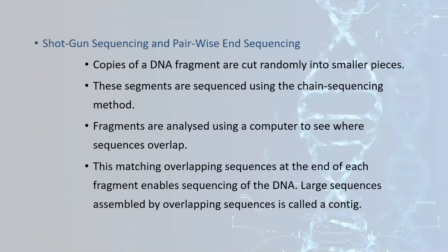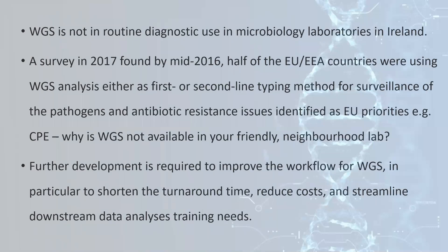Whole genome sequencing is not in routine use in microbiology labs in Ireland. A survey in 2017 found that by mid-2016, half of EU countries were using WGS analysis, either as first or second-line typing, for surveillance of pathogens and antibiotic resistance issues identified as EU priorities, such as carbapenem-producing Enterobacteriaceae.